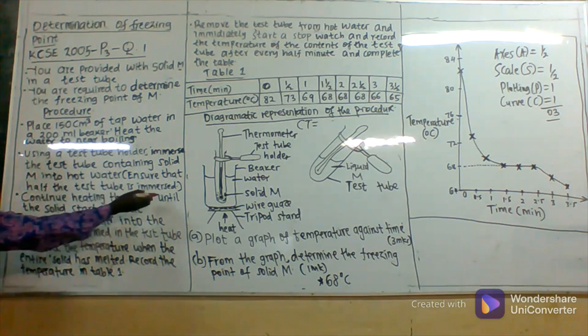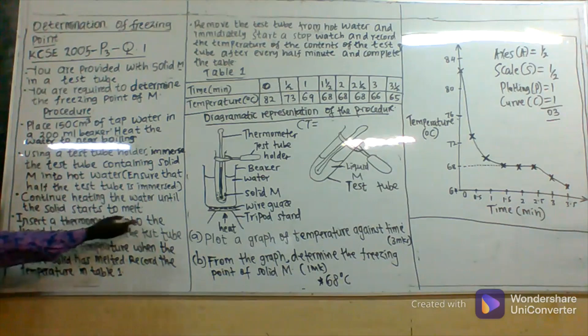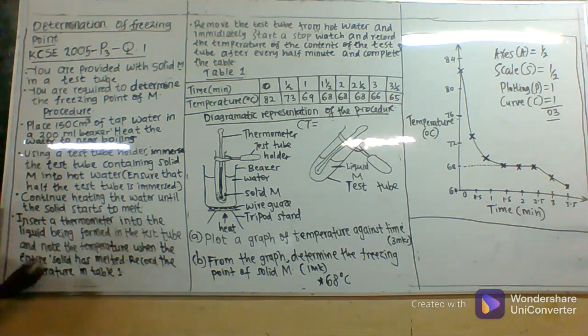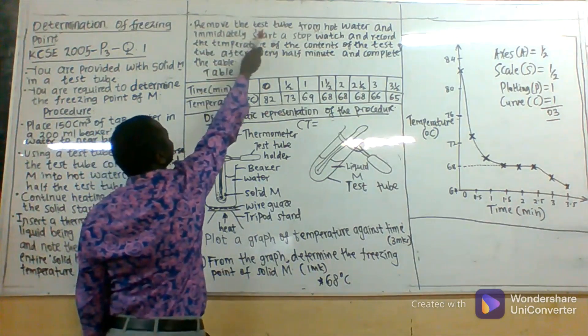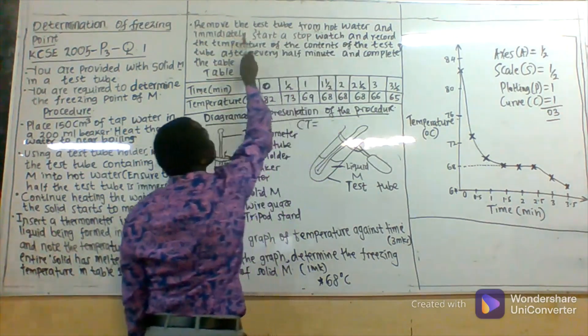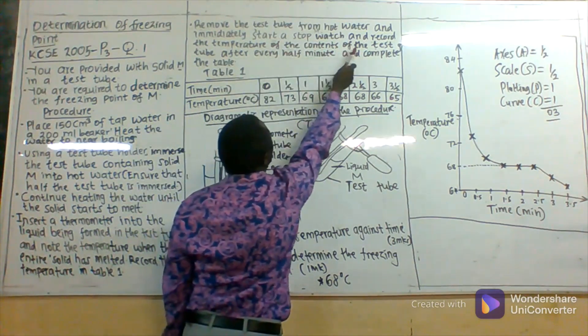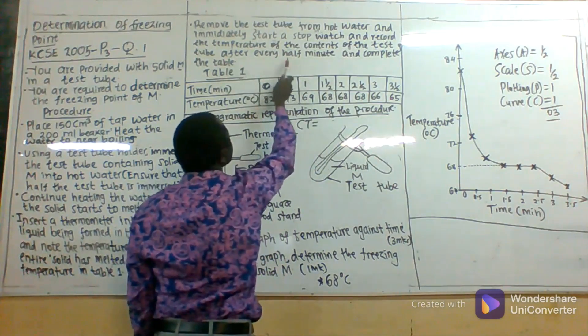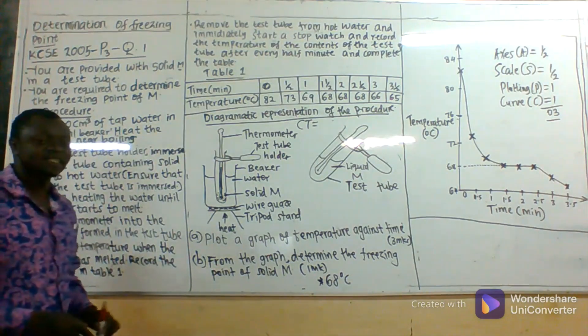Continue heating the water until the solid starts to melt. Insert a thermometer into the liquid being formed in the test tube and note the temperature when the entire solid has melted. Record the temperature in table one. Remove the test tube from hot water and immediately start a stopwatch. Record the temperature of the contents of the test tube after every half minute and complete the table.